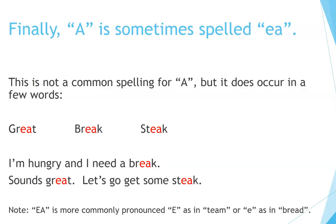Finally, A is sometimes spelled E-A. This is not a common spelling for A, but it does occur in a few words. Great. Break. Steak. I'm hungry and I need a break. Sounds great. Let's go get some steak. Note: E-A is more commonly pronounced as E as in "team" or E as in "bread".